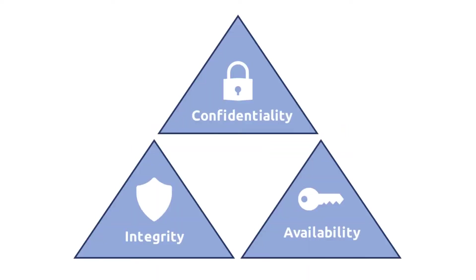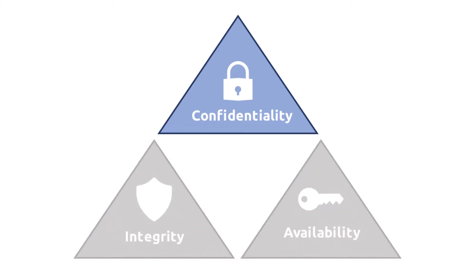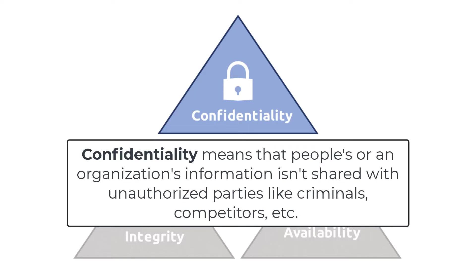CIA stands for confidentiality, integrity, and availability. These three principles create a triangle or triad. Confidentiality means that people's or an organization's information isn't shared with unauthorized parties like criminals, competitors, etc.